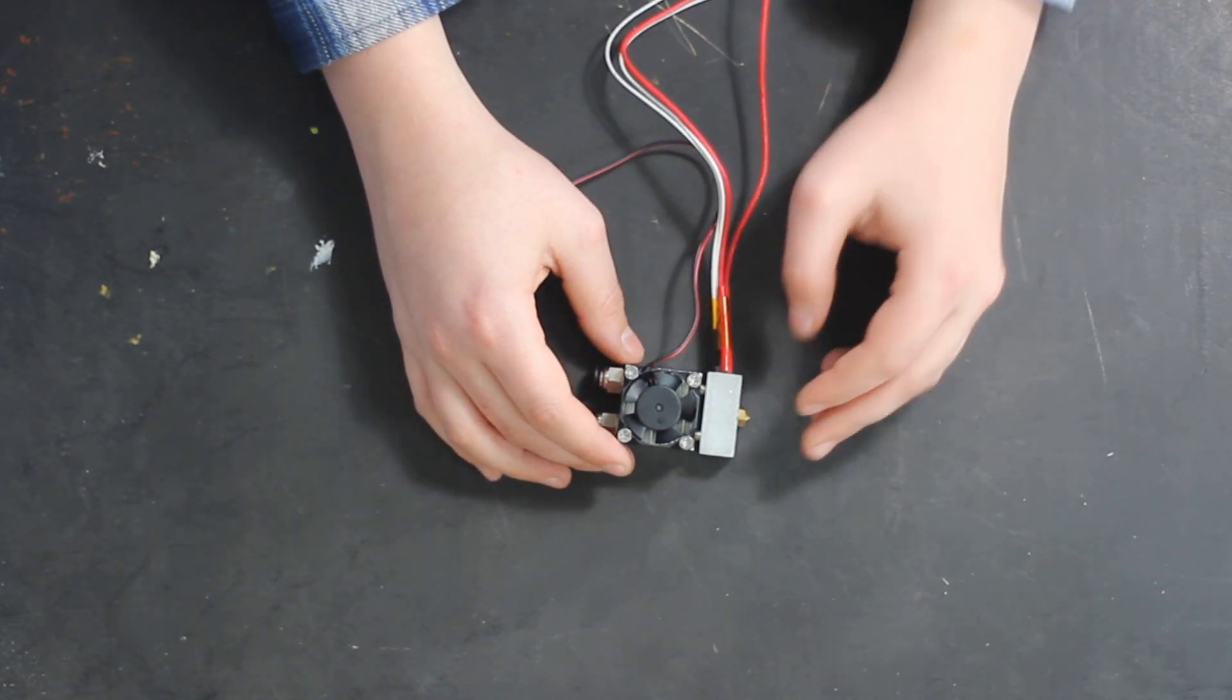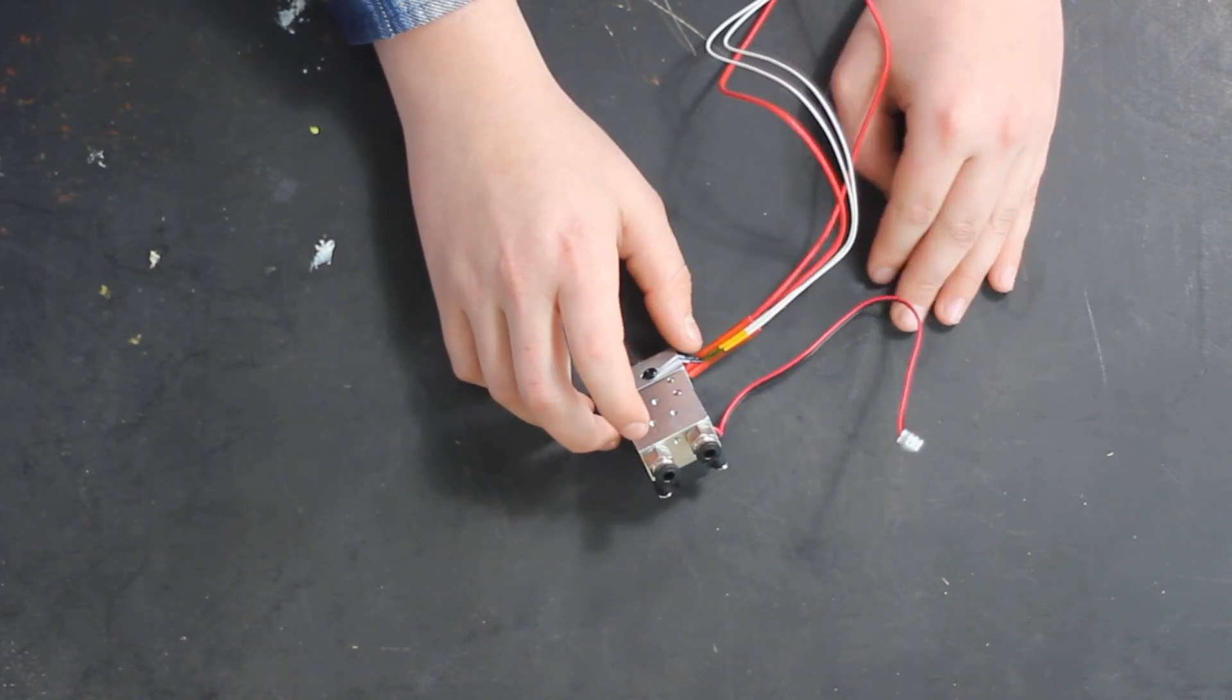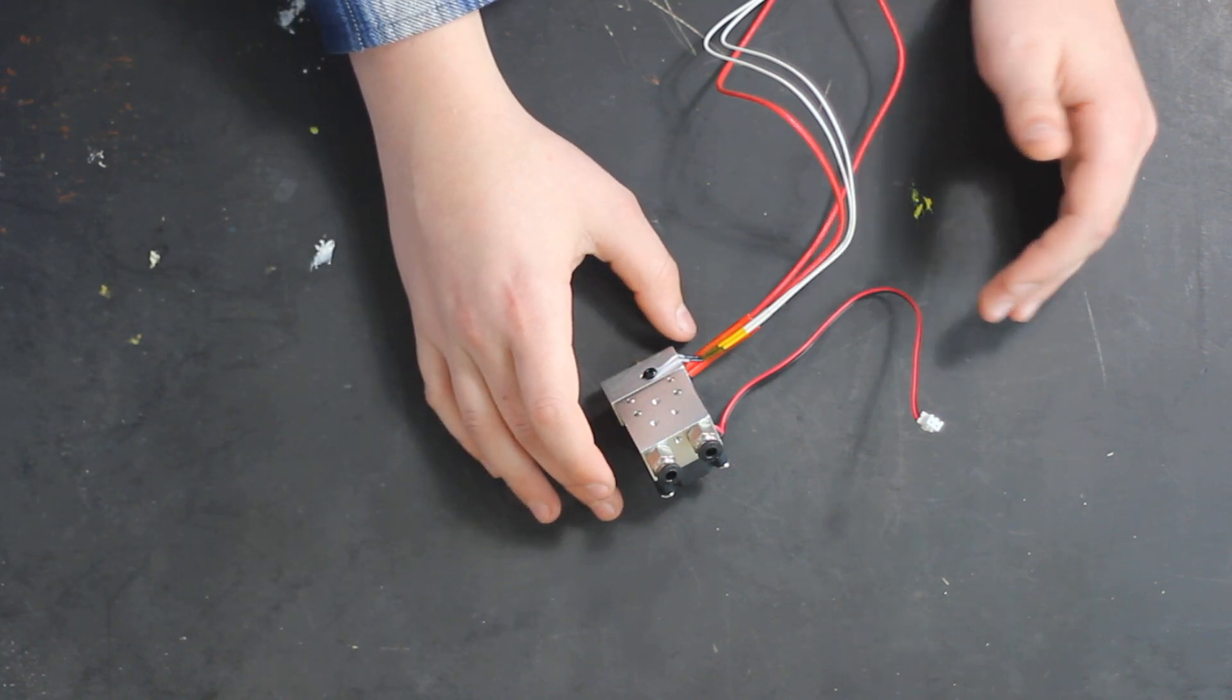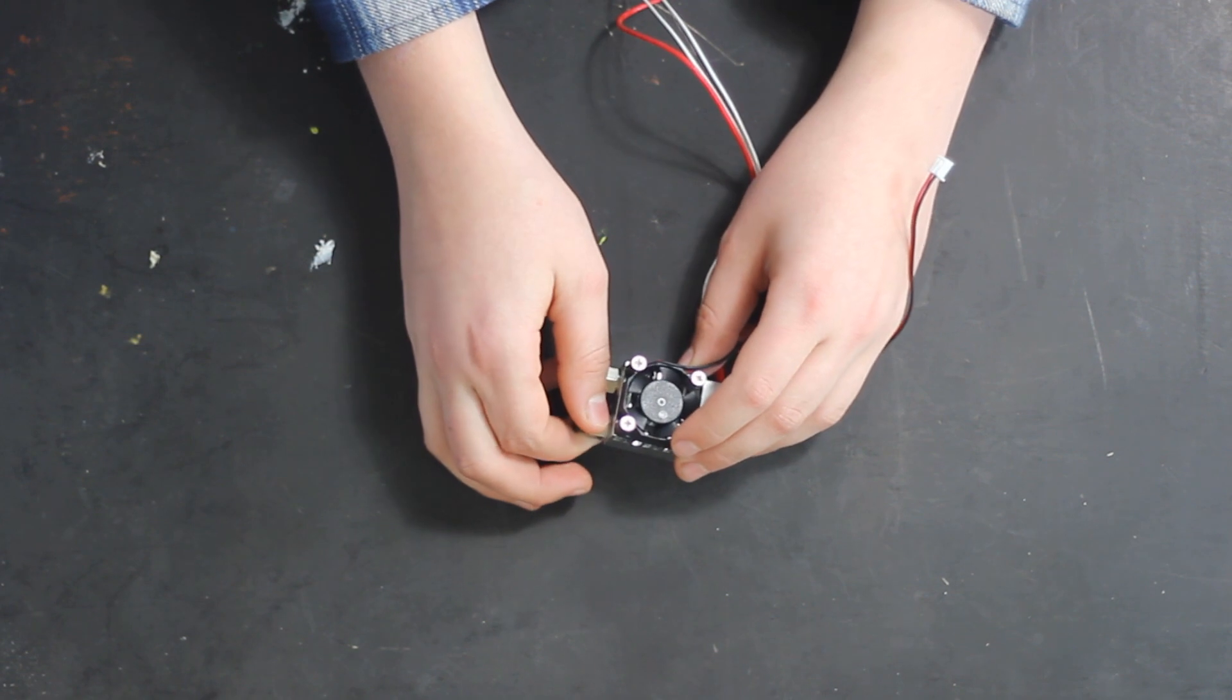Now, this doesn't have a brand associated with it. It's not branded anywhere on the nozzle itself. On Banggood's website, all it says is the model is E3D, but obviously it's not made by E3D itself. But it looks very similar to a Cyclops hotend.